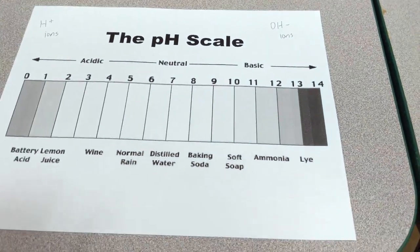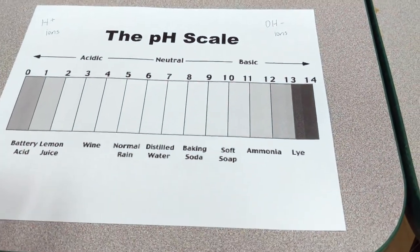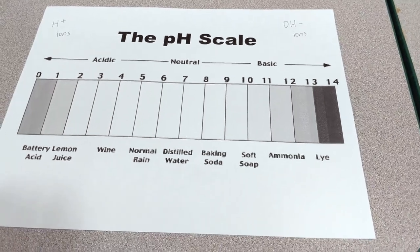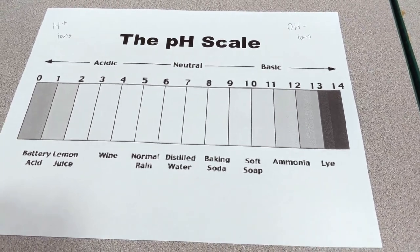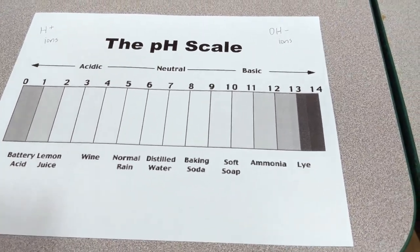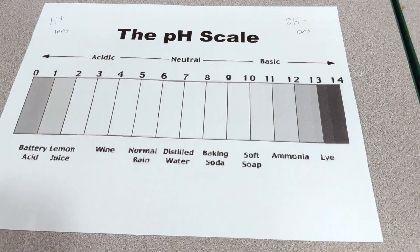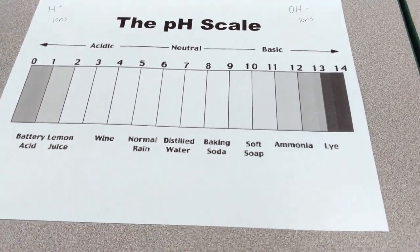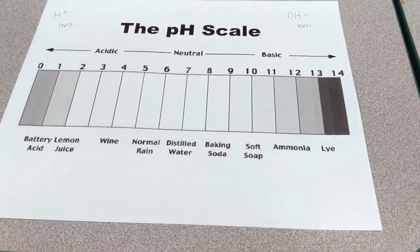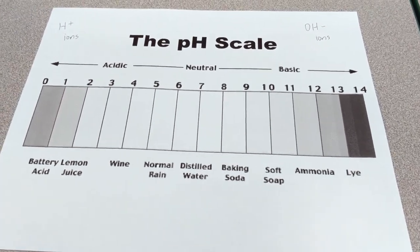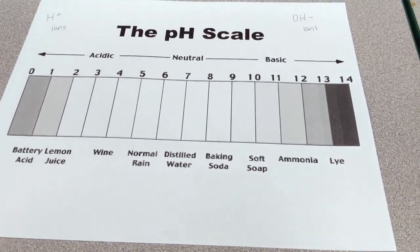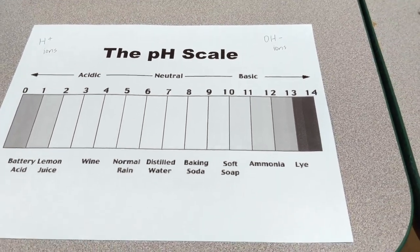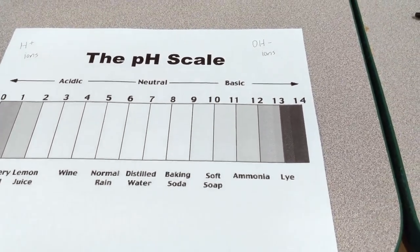We can use various substances as indicators to test the pH of a substance. One such indicator is the pH paper that we saw in class, which changes color depending on what pH the substance is. But another indicator is a compound called anthocyanin.